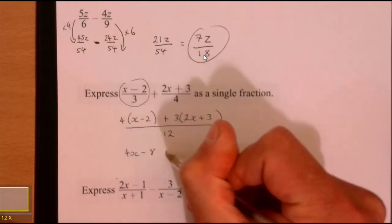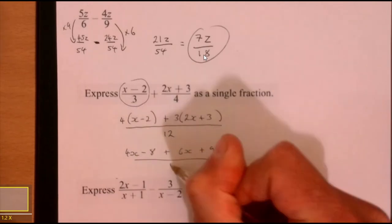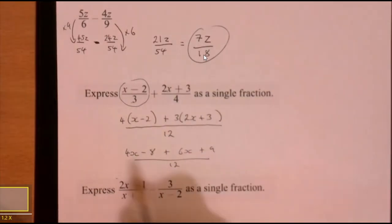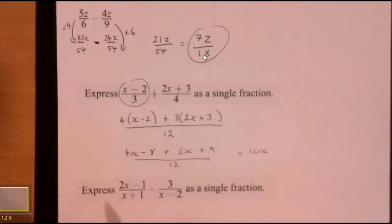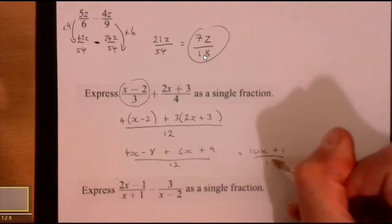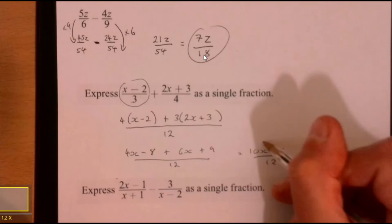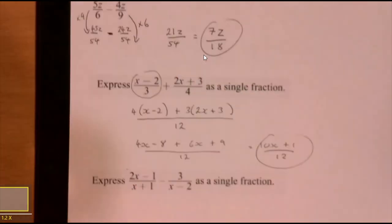Okay, so what do we got? We've got 4x take away 8 plus 6x plus 9. Remember it's all over 12. Now 4x plus 6x, that's going to be 10. I would carry on working down my page, and then plus 1. Anything else I can do? Yeah, that's it.